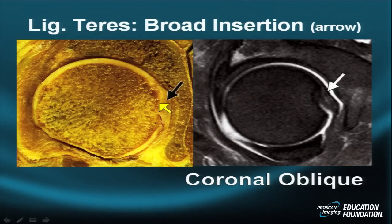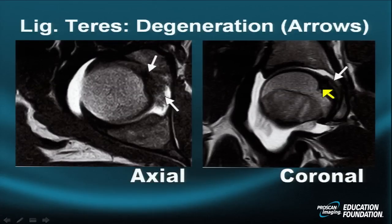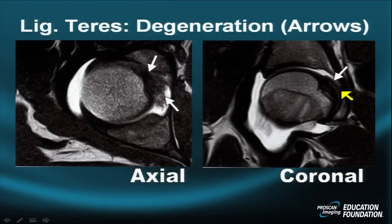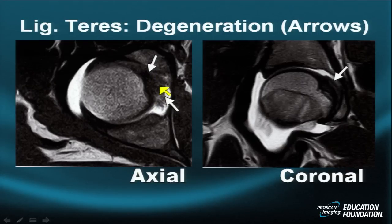An example of ligamentum teres degeneration is seen in the axial projection. It is present in the coronal projection but volume averaging effects reduce conspicuity there. On the left side, bright signal, wispy irregularity, and a frayed appearance of the ligamentum teres are visible as it approaches the fovea capitis.